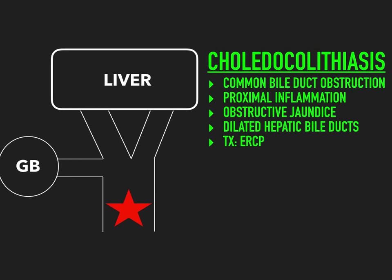The treatment is ERCP. A gastroenterologist puts a scope down into the biliary tree, can see what's in there, and can remove a stone if one is present. It's high yield to know that ERCP is both diagnostic and therapeutic. There's an alternative called MRCP, which is only diagnostic — the MRCP cannot remove stones, but the ERCP can. ERCP has better sensitivity and specificity for diagnosing choledocholithiasis compared to a right upper quadrant ultrasound.